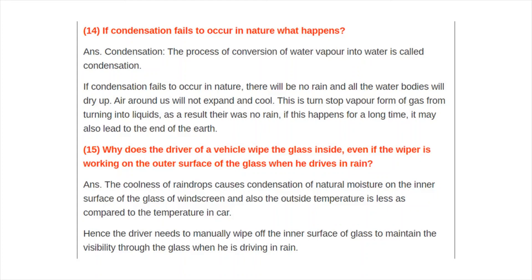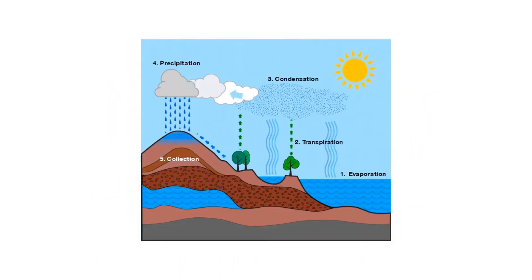Why does the driver of a vehicle wipe the glass inside even if the wiper is working on the outer surface? When driving in rain, the coolness of raindrops causes condensation of natural moisture on the inner surface of the windscreen. Also, the outside temperature is less compared to inside the car, so condensation takes place on the inner surface. The driver needs to manually wipe the inner surface of the glass to maintain visibility while driving in rain.